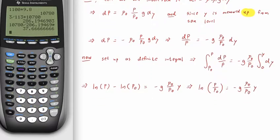Then we want to solve for the pressure. I'll raise everything to the power of e. So p over p naught equals the exponential of negative g rho naught over p naught times y. Multiply both sides by our initial pressure. So p as a function of y is p naught times e to the negative g rho naught over p naught times y, an exponential decay.